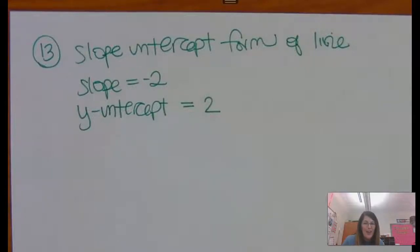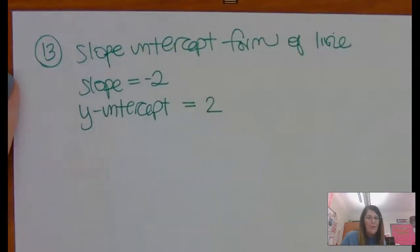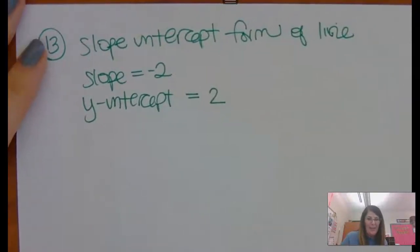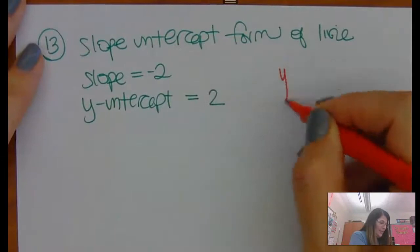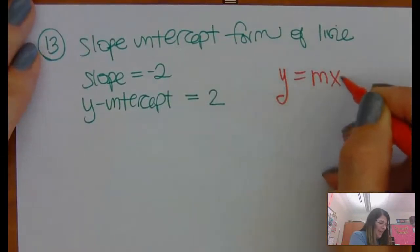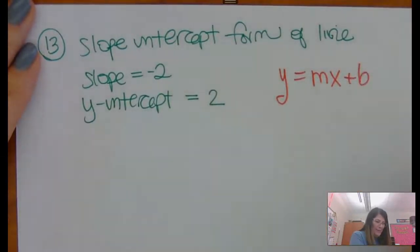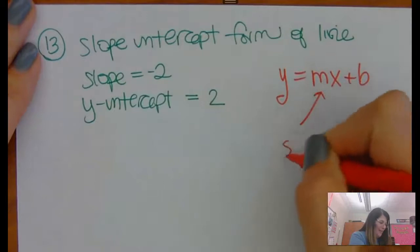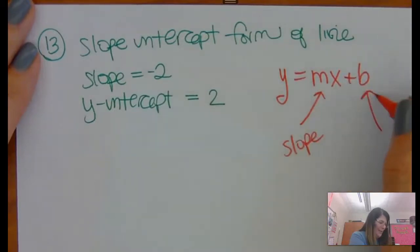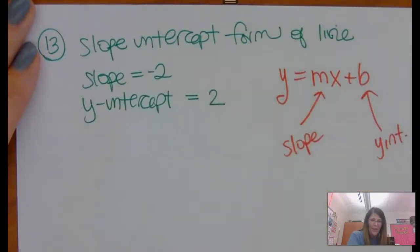If you're watching this, you're having a little trouble writing the slope-intercept form of the line. This one's so easy that sometimes you get confused thinking that it's harder than it is. This is just y equals mx plus b, where m is the slope and b is the y-intercept.